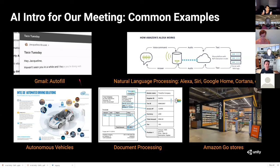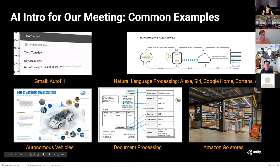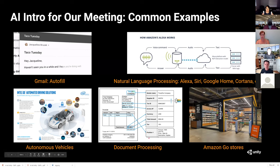At a high level, some common examples of AI you may know: in Gmail and other texting applications, auto-text suggestions are AI — autofill that keeps getting better every few months. Alexa, Siri, Google Home, and Cortana are all natural language processing — a big investment by major players. Autonomous vehicles are the poster child for AI; you can't have a self-driving car without artificial intelligence. Document processing is a multi-billion dollar industry where companies process documents much more quickly with AI. A company out of Atlanta helped process hundreds of thousands of applications for coronavirus government funds, verifying documents were properly filled out.